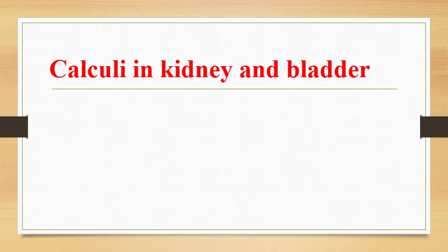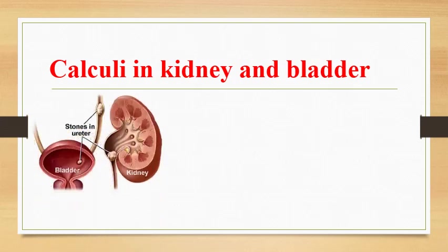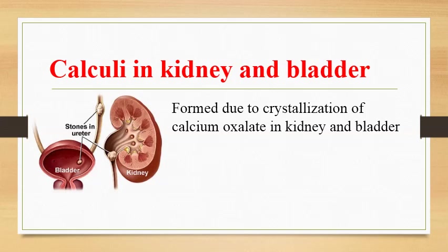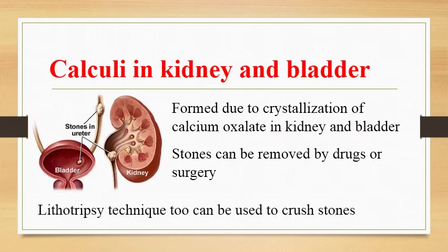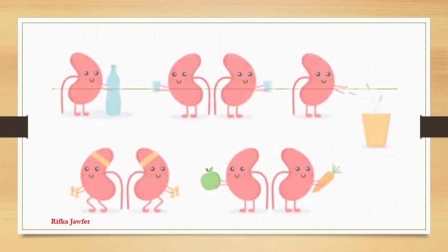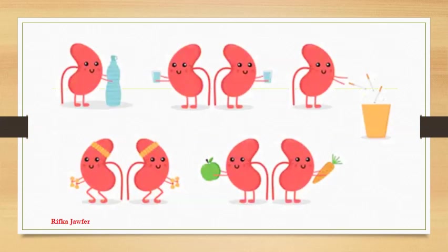Calculi in the kidney and bladder, or kidney stones, are formed due to crystallization of calcium oxalate in the kidney and bladder. The stones can be removed by using drugs or by surgery. Also, the stones can be crushed by lithotripsy technique, which involves applying laser rays or ultrasound waves. By following proper feeding habits, drinking the required volume of water and passing urine on time, these conditions can be avoided.